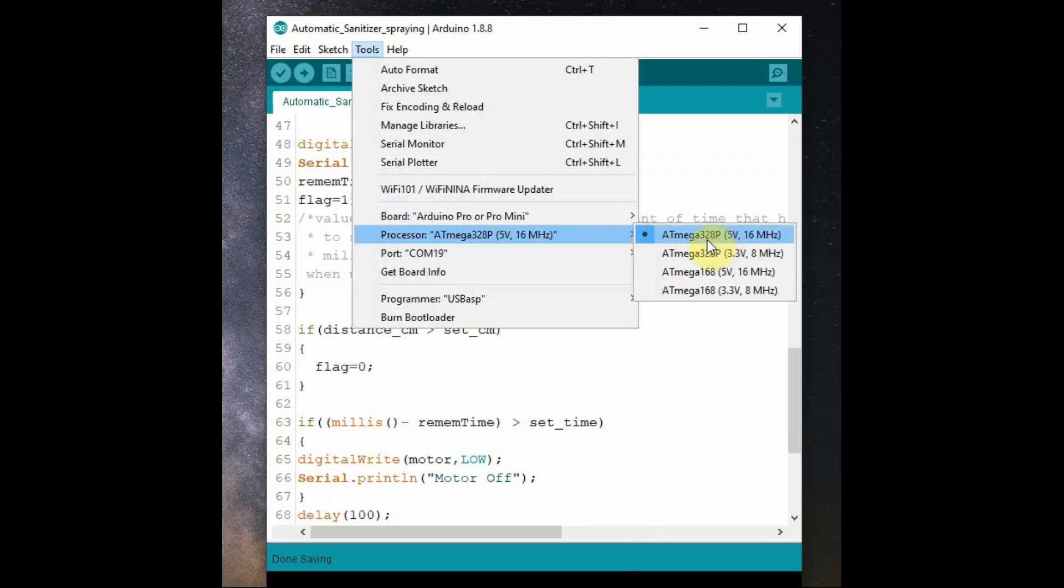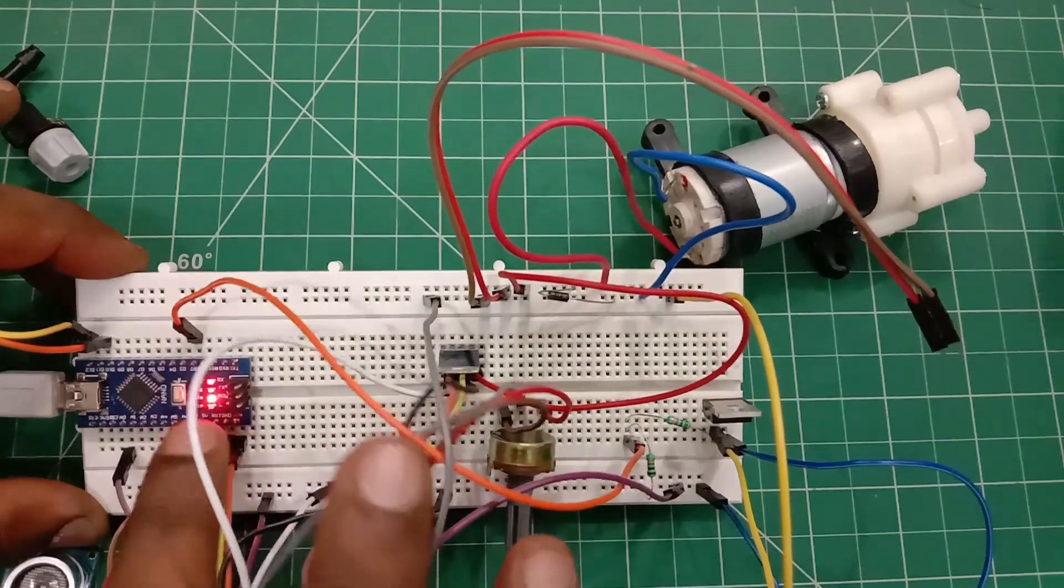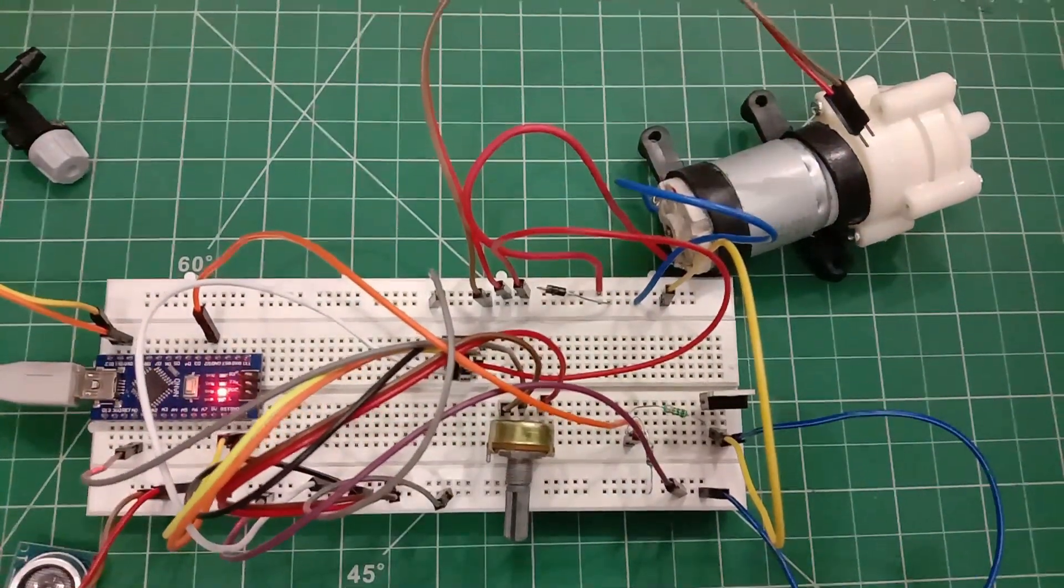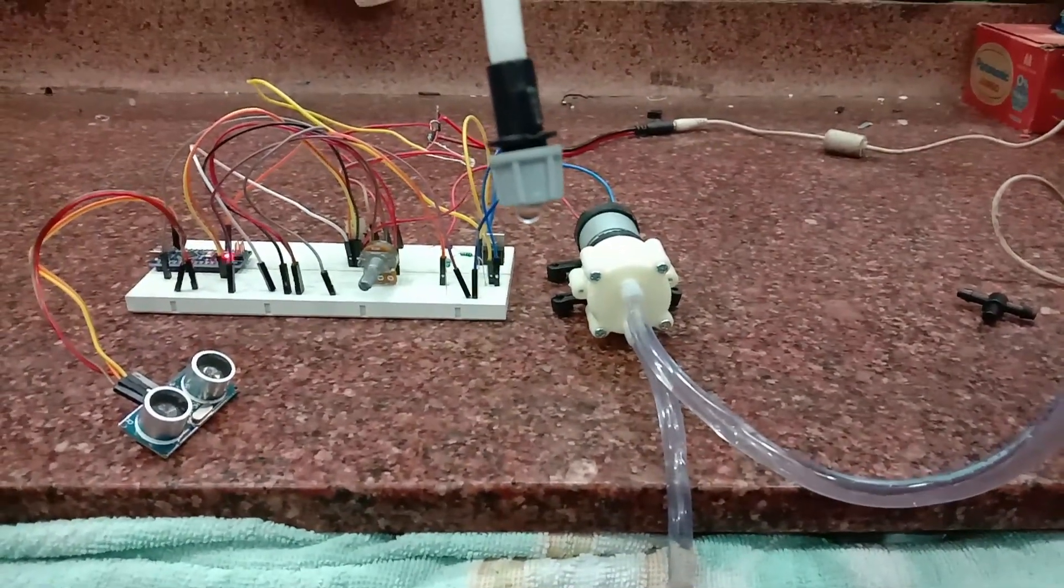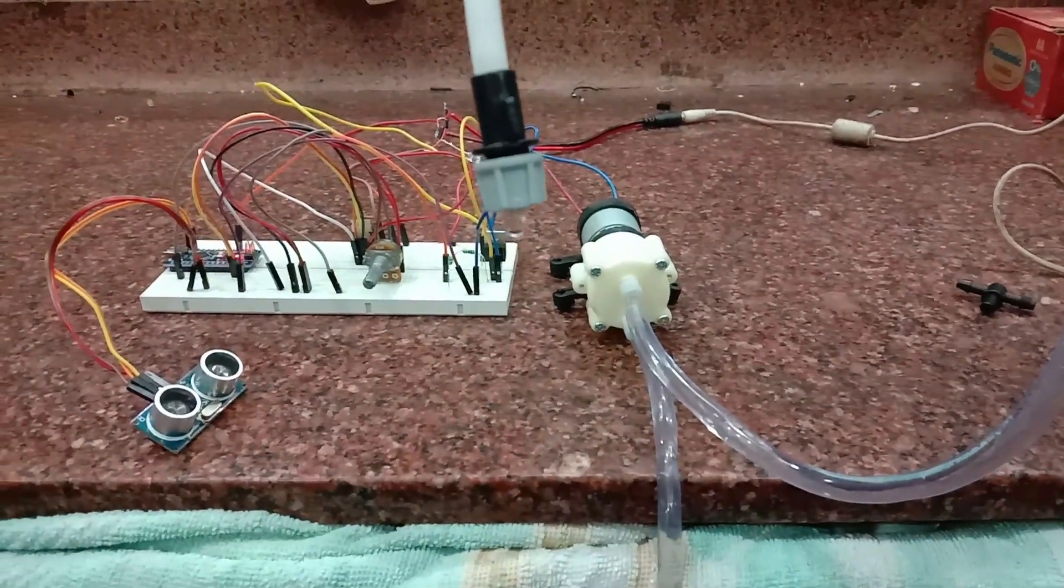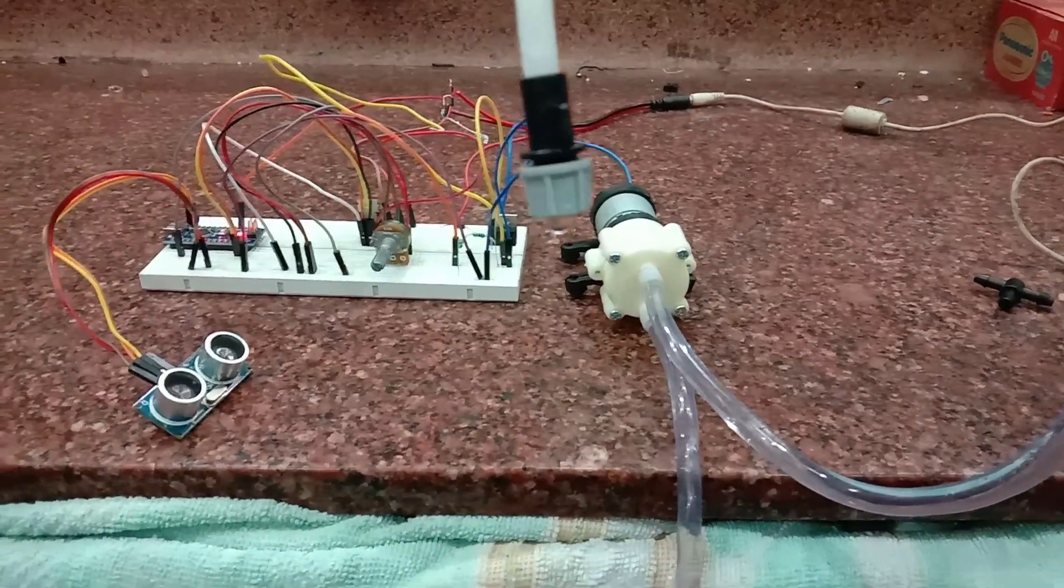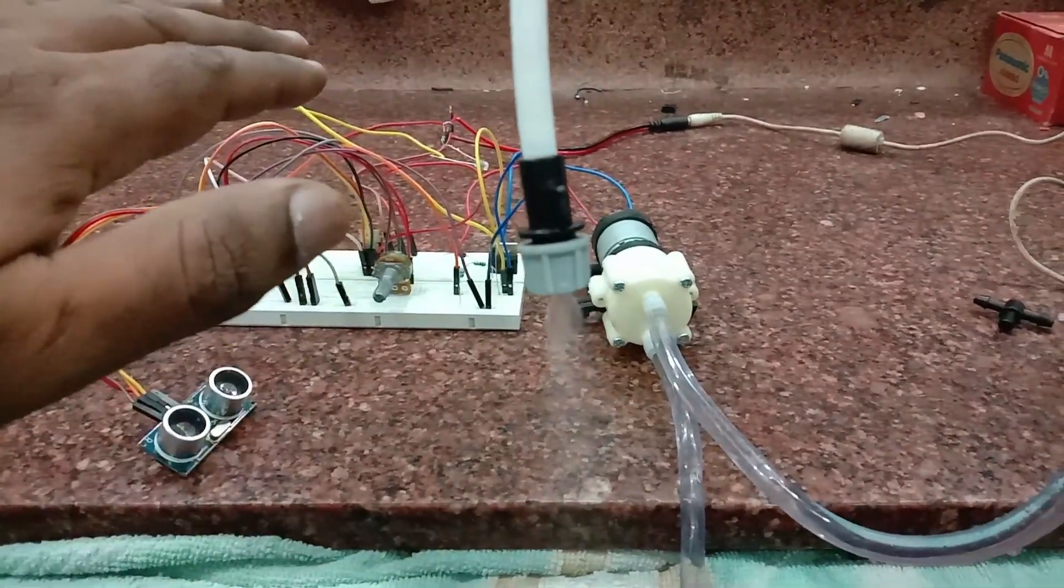You can select Arduino Pro Mini and then upload. Once the code is uploaded you can see the function. If you bring your hand near the ultrasonic sensor, that is if it is within the 20 centimeter range, the motor, the MOSFET will be triggered and you can see the spray of sanitizer.